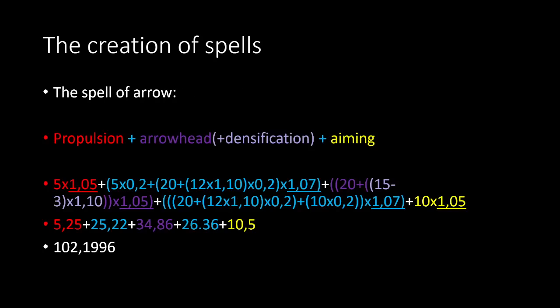Now I'll talk about the creation of spells. In fact, there's no name for spells—you can do everything you want. But there are spells which are very common, so they have names. Here I take the example of the Spell of Arrow. It's a very basic spell—generally it's the first complex spell that witches or wizards learn.